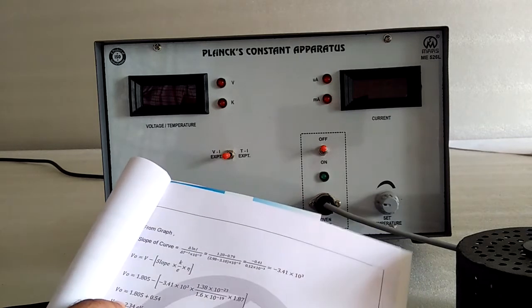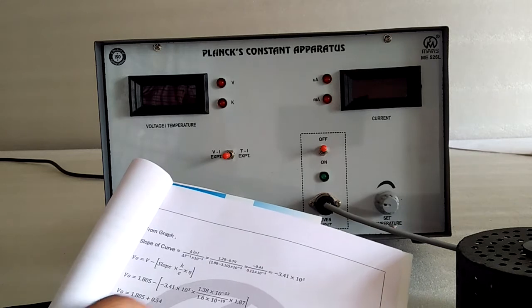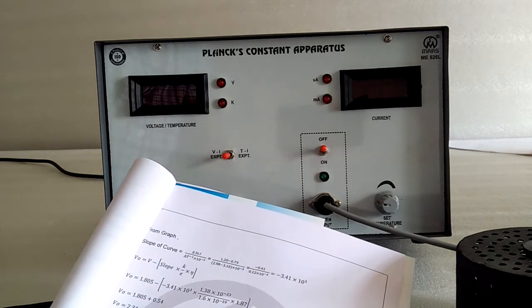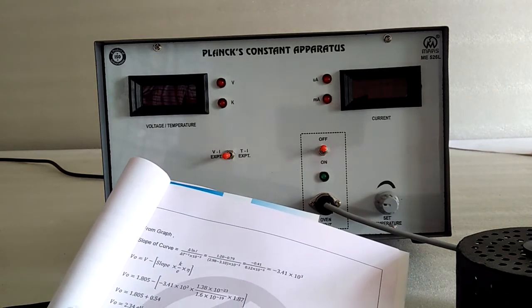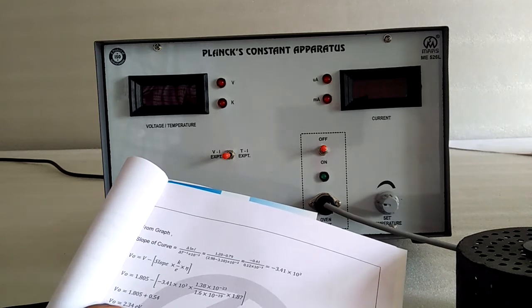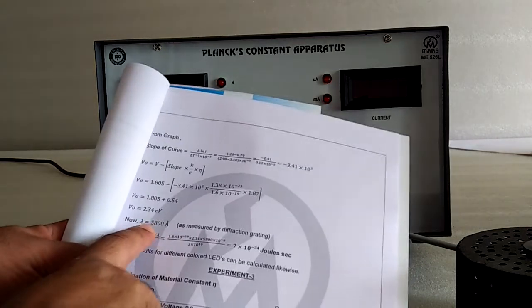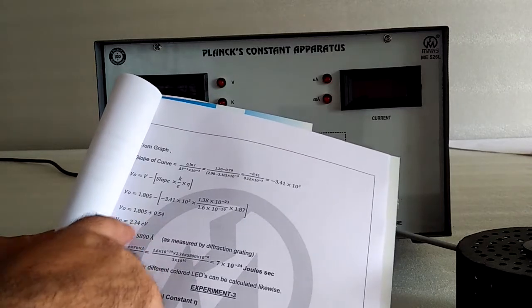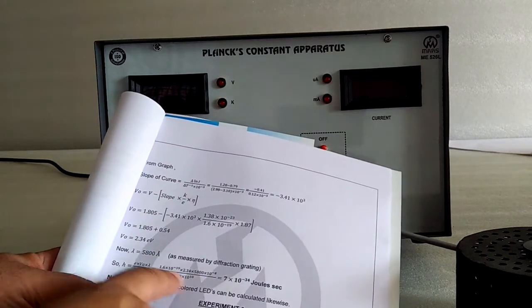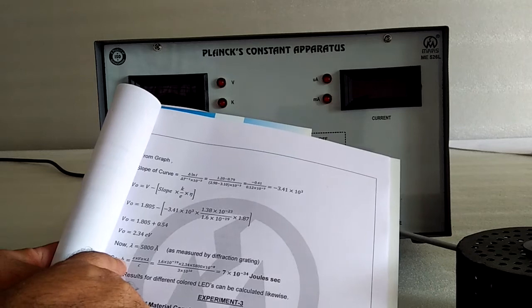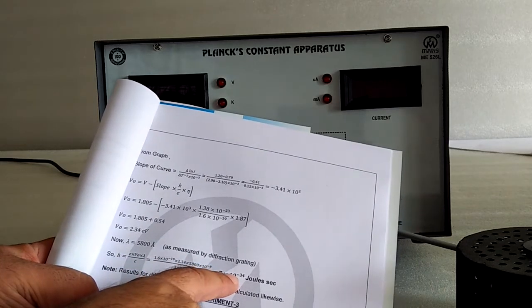Then, find the V0 from here. Lambda, according to the light of the LED, we have given. Put this value and lambda in the formulation and find the Planck constant value.